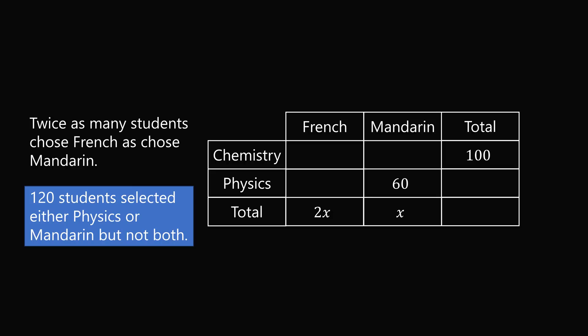Now, 120 students selected either physics or Mandarin, but not both. So we're looking at physics-French and chemistry-Mandarin. There's a total between these two cells of 120 students. So if one of the cells — let's say physics-French — is y, then the other cell, chemistry-Mandarin, will be 120 minus y.